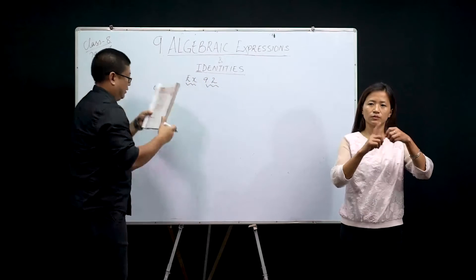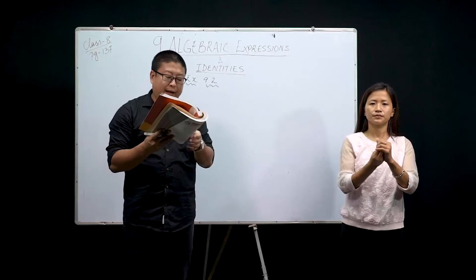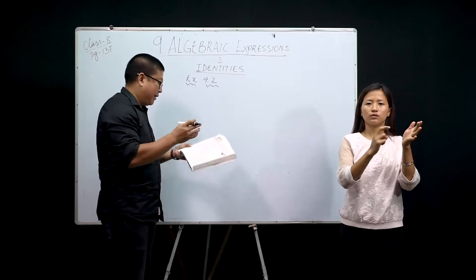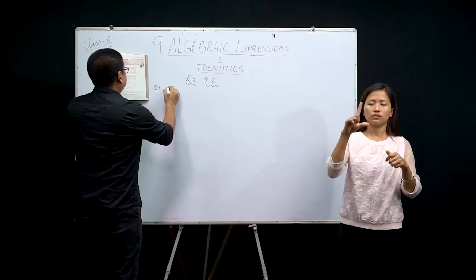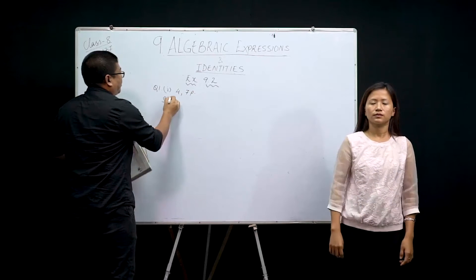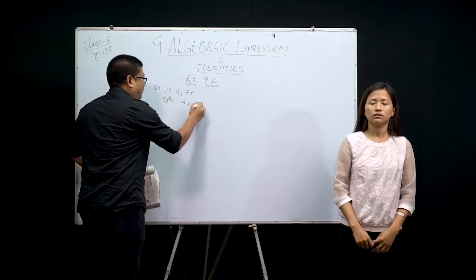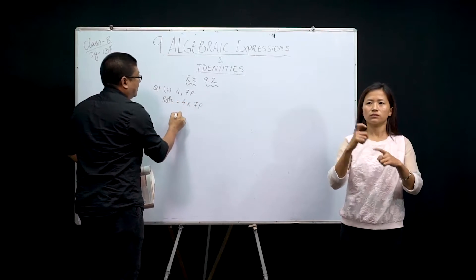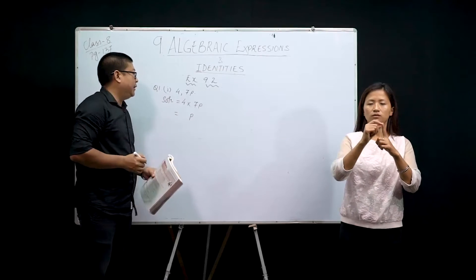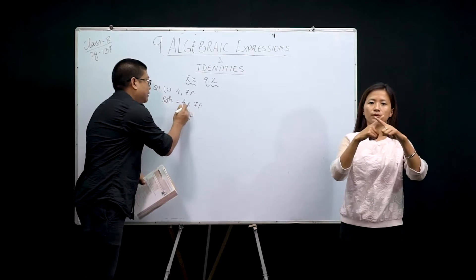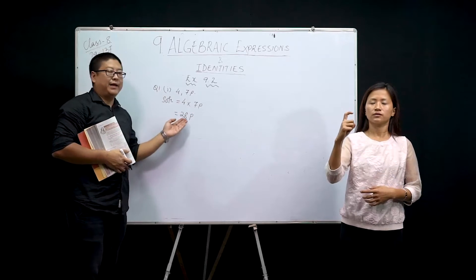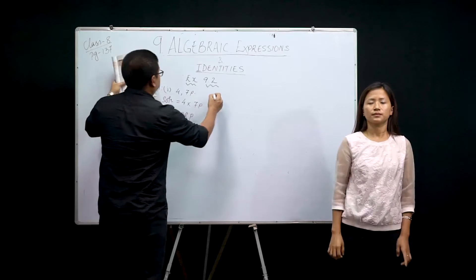Question number 1: Find the product of the following pairs of monomials. They have given us monomials, meaning only one term. The first question is 4 and 7p. We have to find the product: 4 into 7p. There is only one p, so we write p, and multiply the numbers: 4 into 7 is 28. So the answer is 28p. Quite simple — just simple multiplication.